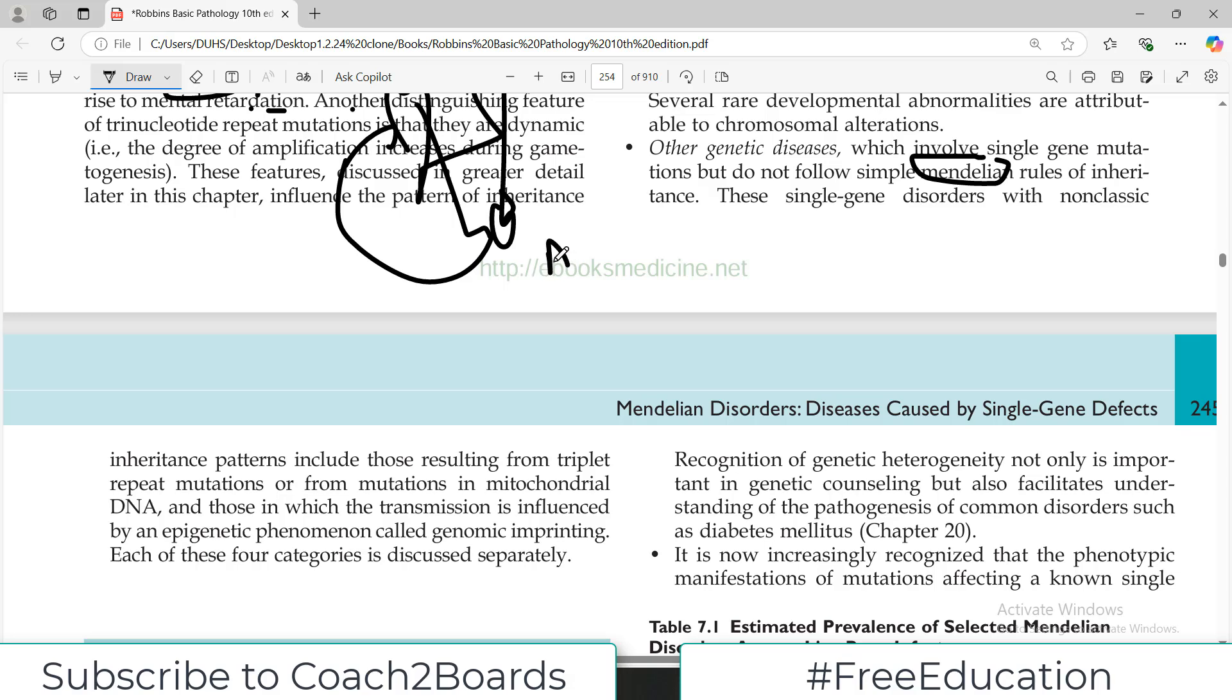For example, if we are talking about autosomal dominant disorders, what are the Mendelian rules to follow? If we are talking about autosomal recessive disorders, what are the Mendelian rules?